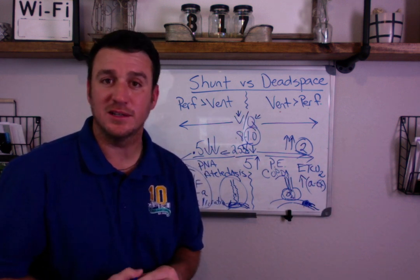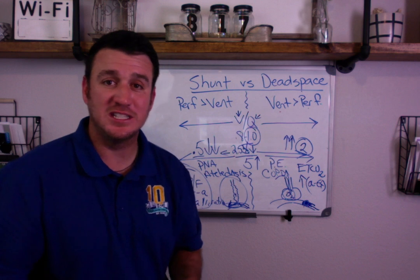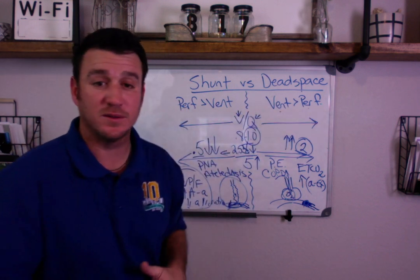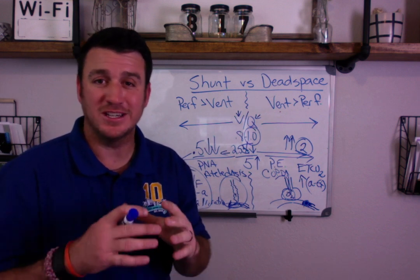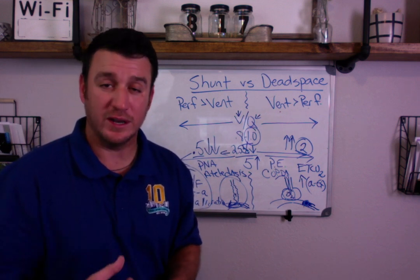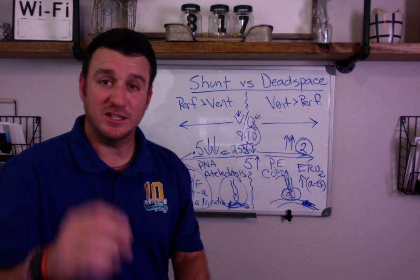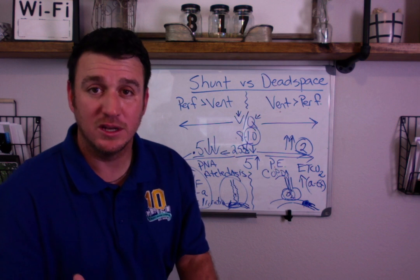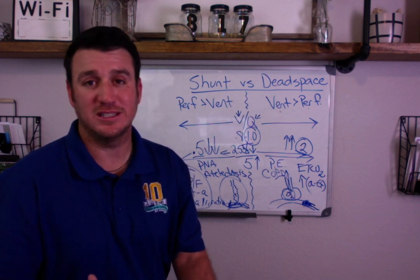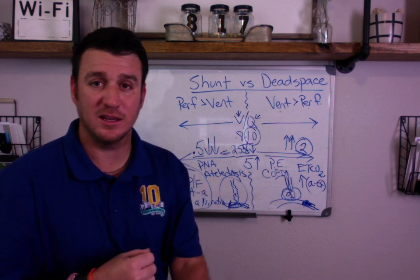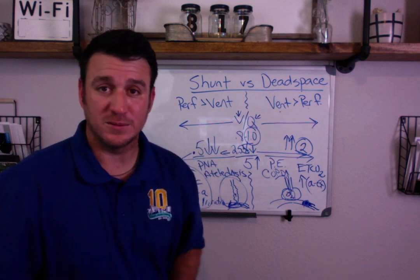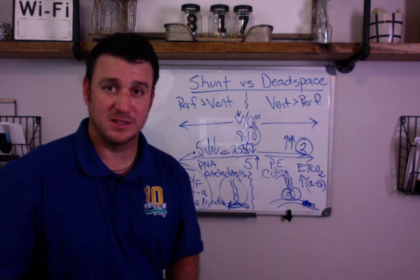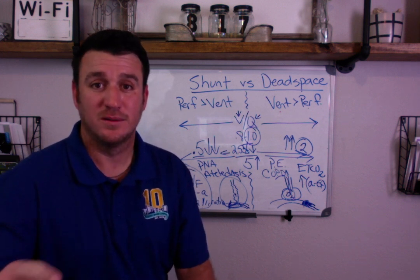So to summarize: shunt leads to venous admixture, which is a dilution of arterial oxygenation. Dead space leads to decreasing end-tidal CO2 due to dilution of your exhaled CO2. I hope this gives you more than just 'perfusion greater than ventilation, ventilation greater than perfusion.' I hope you're asking questions in your educational process, and that your instructors are helping you further understand these concepts. This understanding is the difference between an exceptional respiratory therapist and an average one. Just don't be average. Hope you're having a great day.